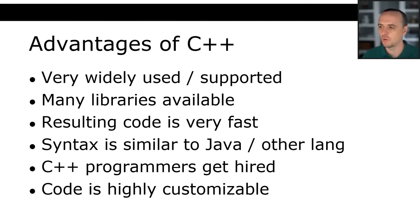What are some properties of C++? C++ is statically typed. Variables are defined and typed before they're used. If you've used C or Java, it's the same thing. But if you've used Python, Python is not statically typed.